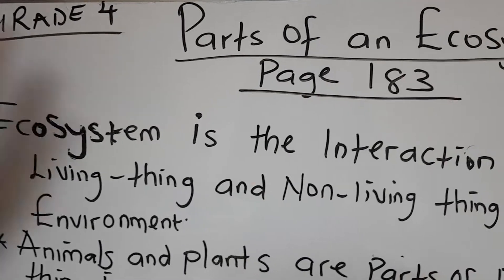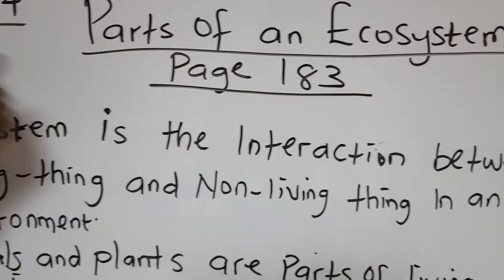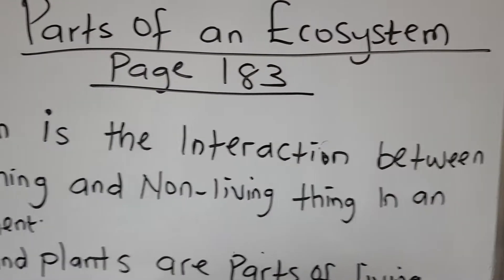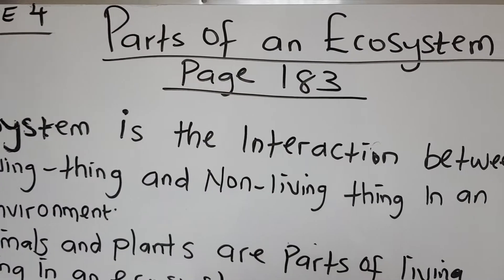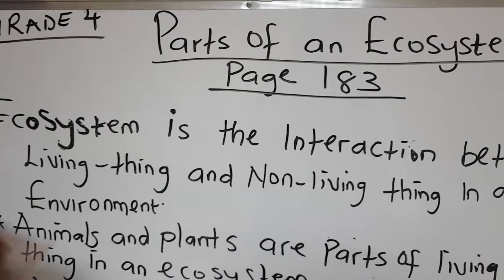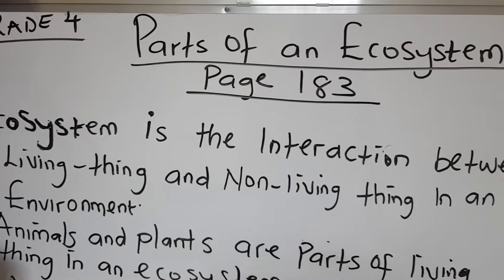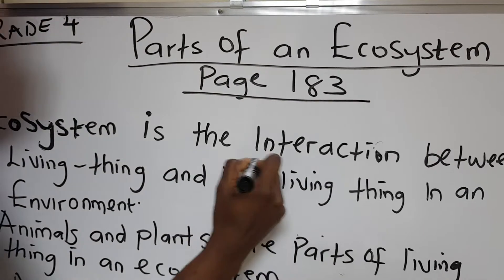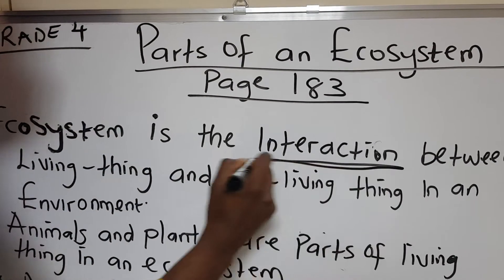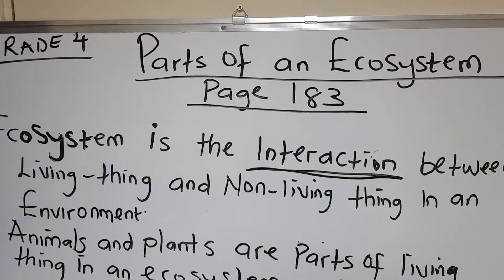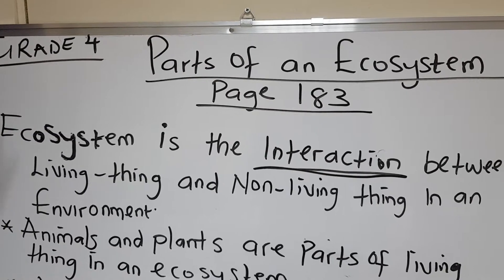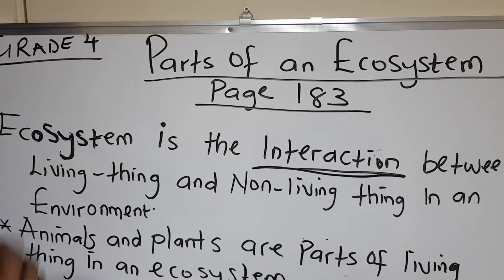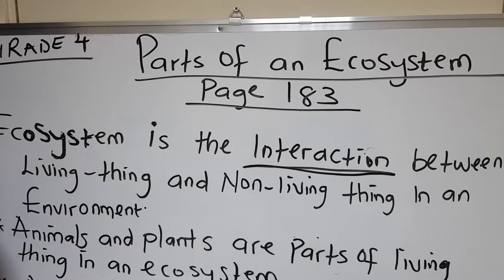Ecosystem is the interaction between living things and non-living things in an environment. Interaction here means what? Relationship. The relationship between living things and non-living things in an environment.